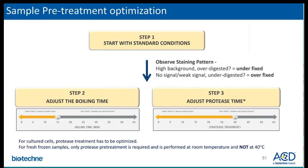When running the RNAscope assay on your samples, begin with standard conditions of 15 minutes of target retrieval at 100 degrees Celsius and 30 minutes of protease treatment at 40 degrees for FFPE tissue. Observe for signal intensity, background with control probes, and sample morphology. Based on your results, we can make recommendations to scale the pretreatment up or down. Both target retrieval and protease digestion perform on a sliding scale that you may adjust depending on what your samples look like or what the fixation conditions are.